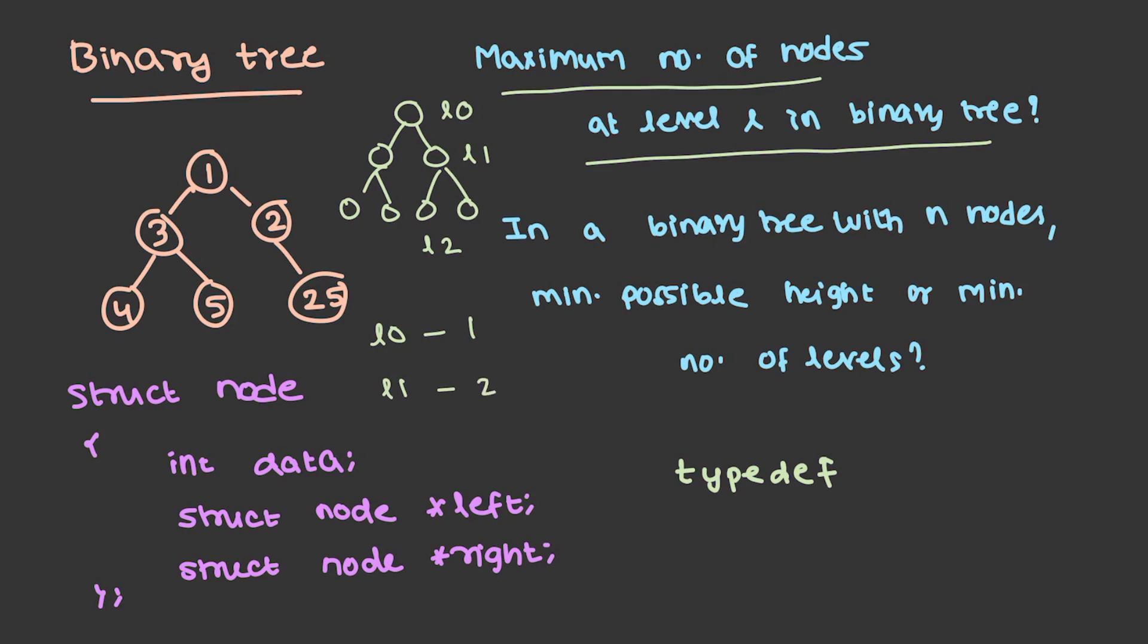Let me call it level 0, level 1 and this is level 2. If you just see, at level 0 I am having 1 node, at level 1 I am having 2, at level 2, 4 nodes respectively, which are 2 power 0, 2 power 1 and 2 power 2. So at level L, we are having 2 power L maximum number of nodes if it is a binary tree. For solving all of these type of questions, you can take an example and you can solve it very easily.